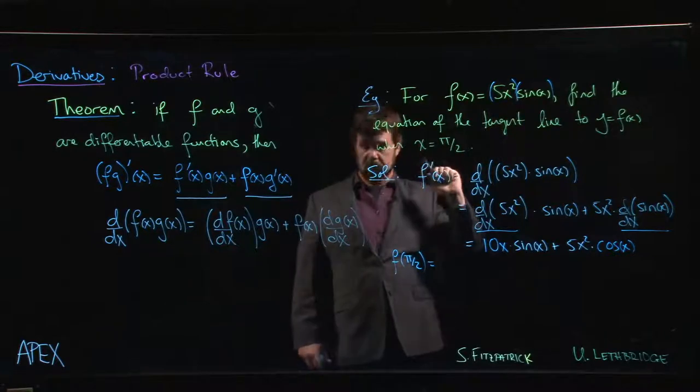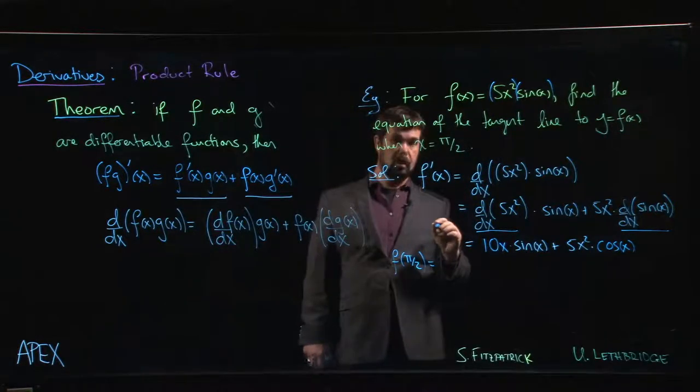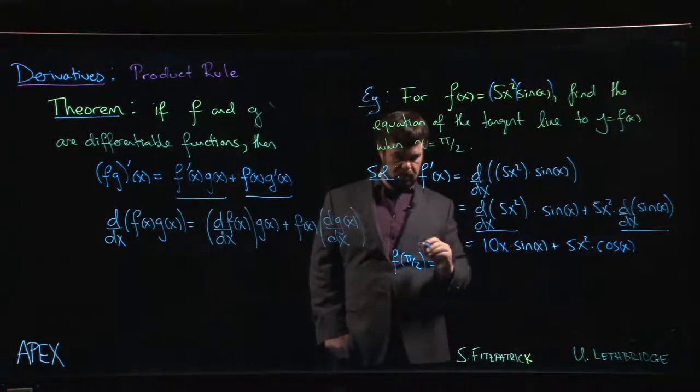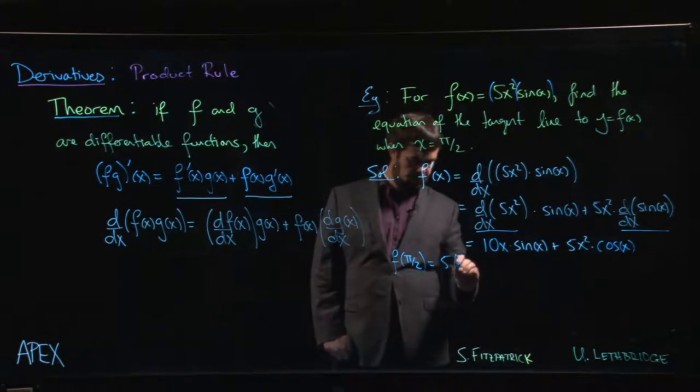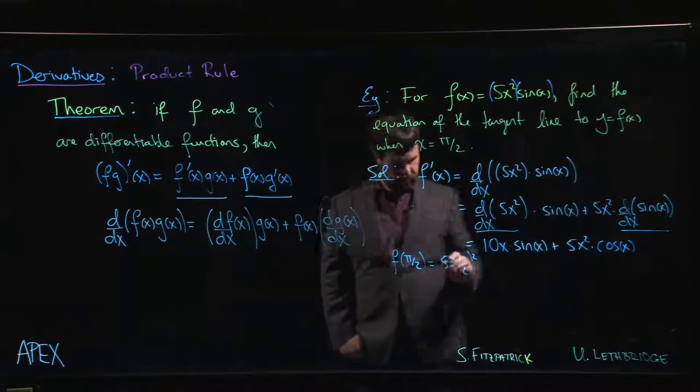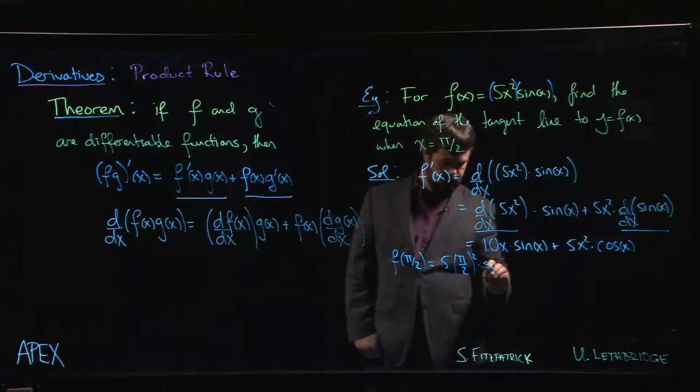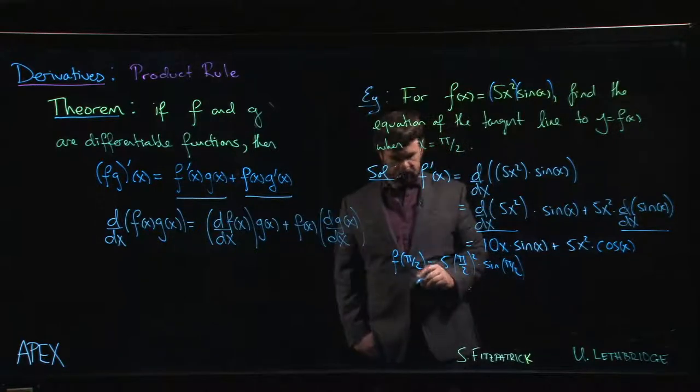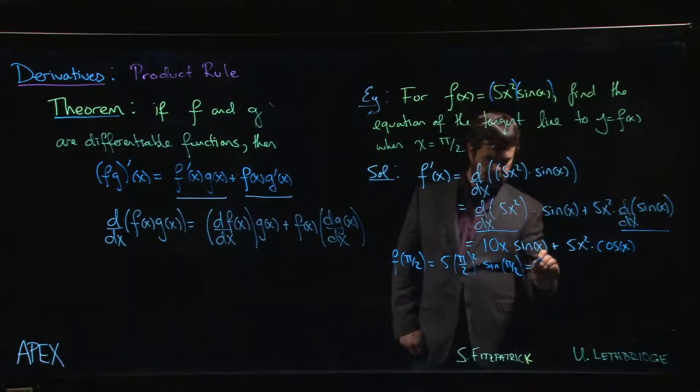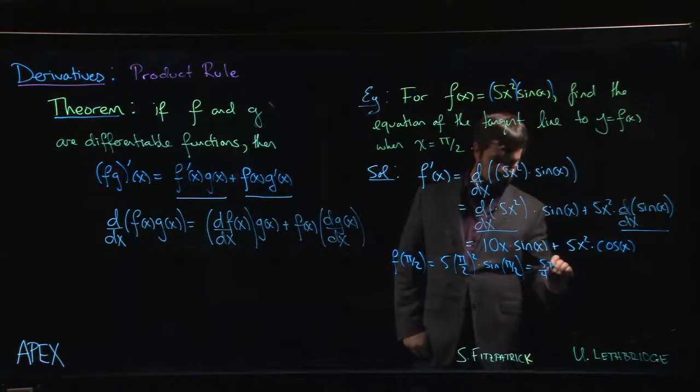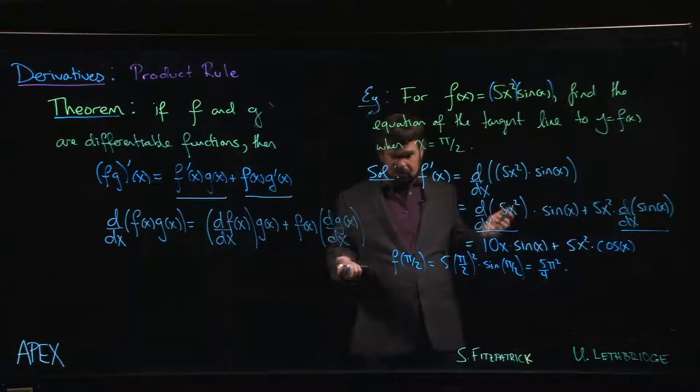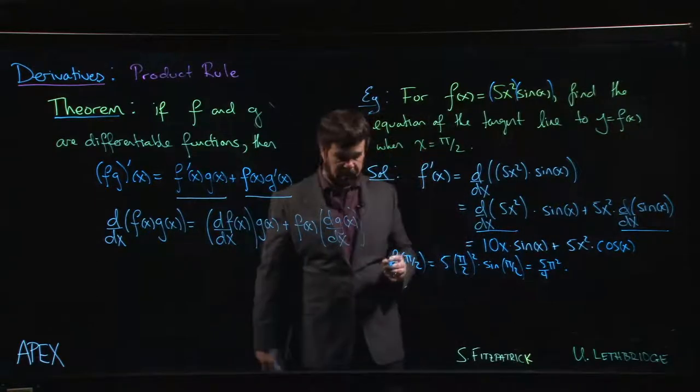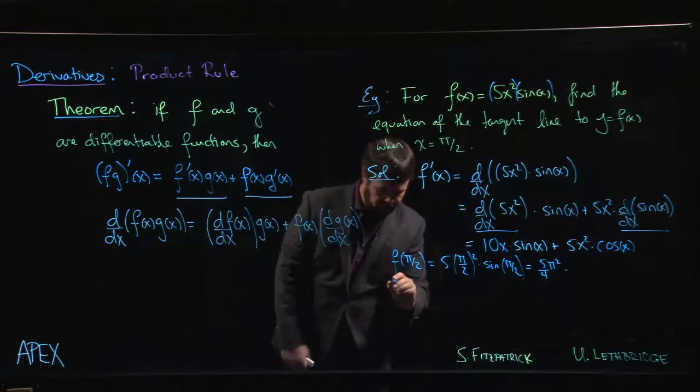Well, sine at pi over 2 is equal to 1. All right, so this is going to be 5 times pi over 2 squared times sine at pi over 2. So this is going to be 5 over 4 pi squared. It's not the greatest number, but it's fine. We can write it down. Not every number in calculus is going to look nice.